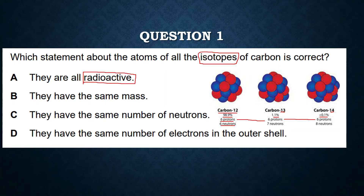Isotopes can be radioactive, but the word 'all' eliminates this option, because not all of them are radioactive. Part B says they have the same mass — no, they don't have the same mass, as explained, so this is also eliminated.